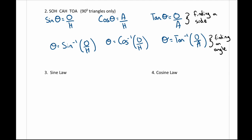For sine law, there was basically one law used for both finding sides and angles. Sine law is a ratio of sine of an angle and its corresponding side, and it states that ratio is equal to the ratio of every other angle in the triangle and its corresponding side. The key thing with the sine law formula is that it's for non-right angle triangles.